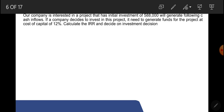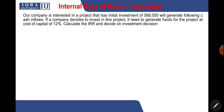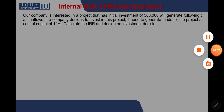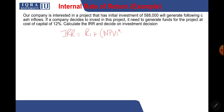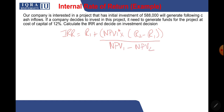Now we use the approximation formula. Writing it out: IRR equals R1 plus NPV1 multiplied by (R2 minus R1), all divided by (NPV1 minus NPV2), where NPV1 is the higher net present value and NPV2 is the lower net present value.